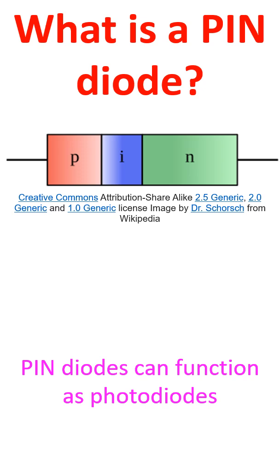A PIN diode is a diode with an additional undoped region of intrinsic semiconductor. Usual diodes have P and N types of semiconductors meeting at a junction. For a PIN diode, the I or intrinsic region is between the P and N type regions. The P and N type regions may be heavily doped and used for ohmic contacts. The intrinsic region makes a PIN diode inferior as a rectifier compared to PN diodes.